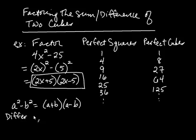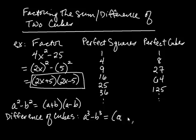So what is the difference of cubes? Well, the formula is this. It's whenever you have a cubed minus b cubed, that's going to be equal to a minus b times a squared plus ab plus b squared.